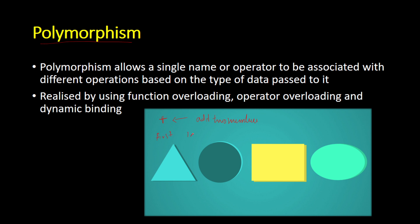Now, if it's possible to use the plus operator to concatenate two string elements — say, a first name and a last name — that gives extra functionality to the plus operator beyond normal mathematical logic. The plus operator would now be able to add two strings as well as two numbers. If you can make one operator do many functionalities, we call that polymorphism.